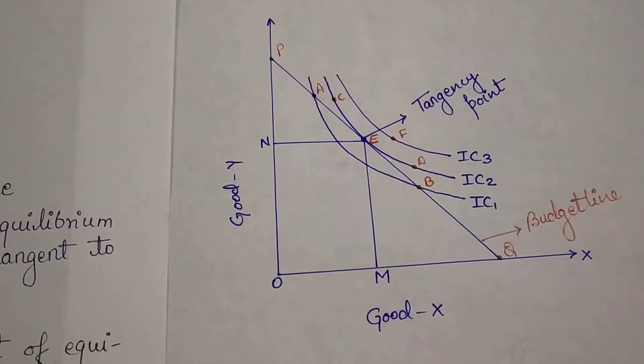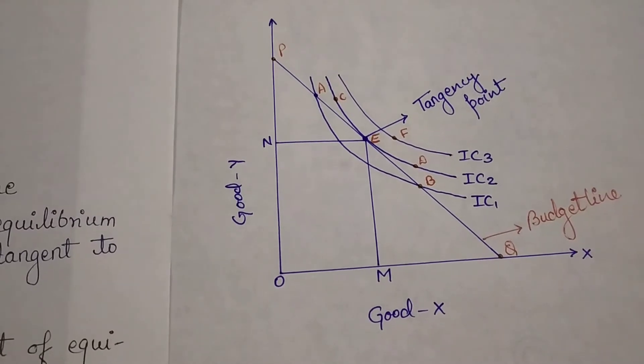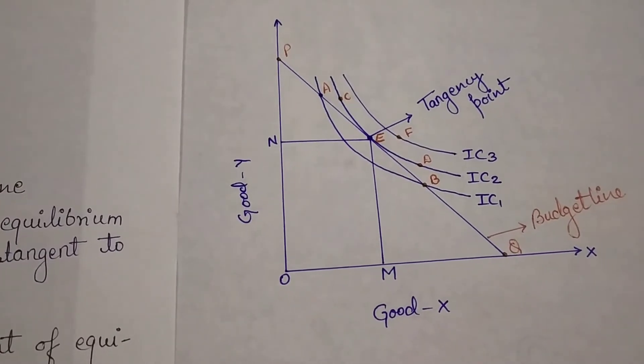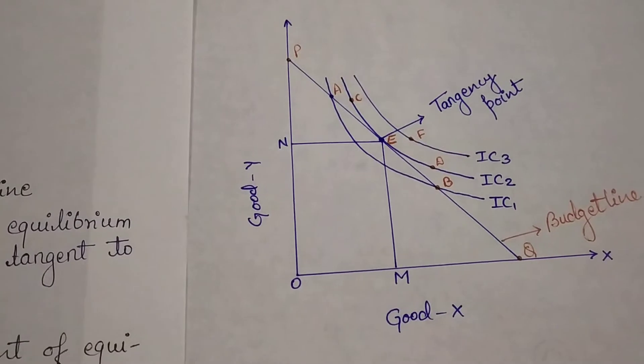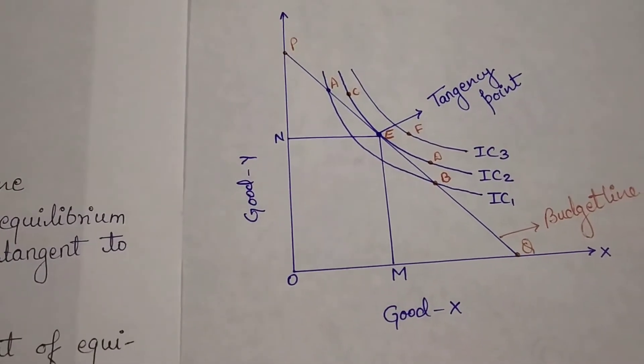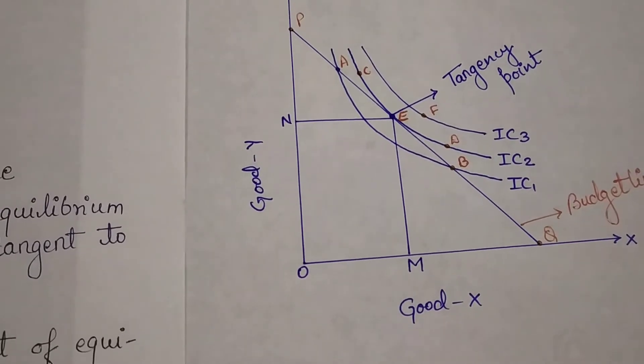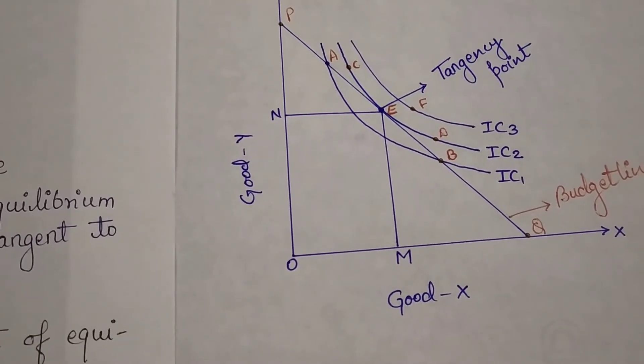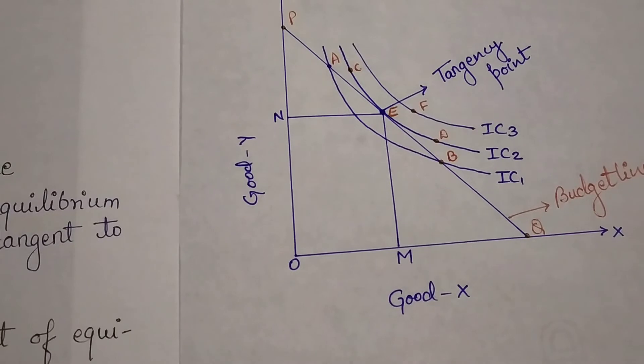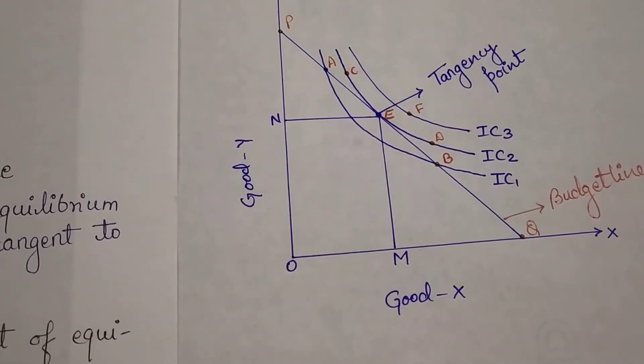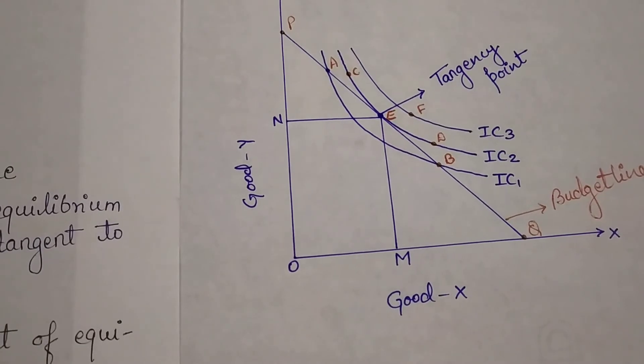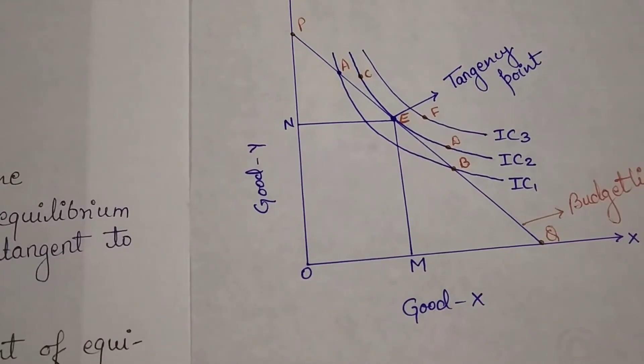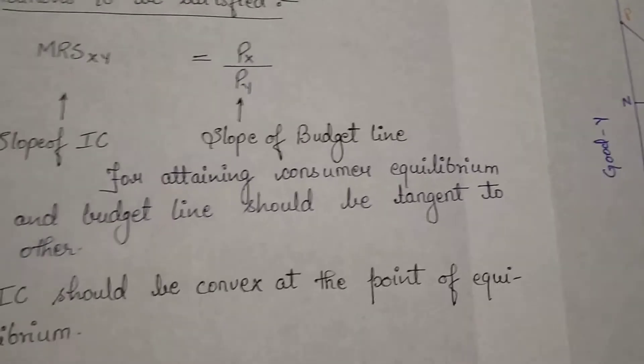So here point E is the equilibrium point. So now what we can say is that good X in OM quantity and good Y in ON quantity, this is our equilibrium output. Good Y in ON and good X in OM, and point E is the equilibrium point.